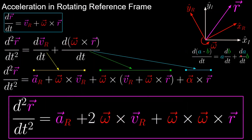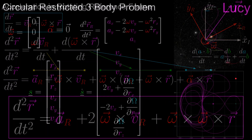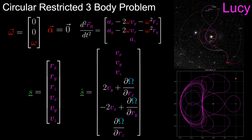Next we're going to take the second derivative, from which we'll see where the Coriolis and centrifugal accelerations come from. Finally we'll go over a quick sneak peek of the next video, which will be how to apply these equations of motion to the circular-restricted three-body problem in astrodynamics, where we solve second-order differential equations modeled in a rotating frame to propagate trajectories.